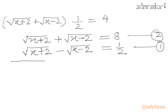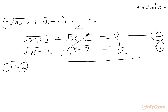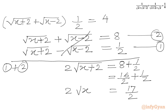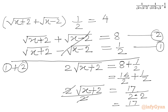Now we are going to add both equations: equation 1 plus equation 2. The square root (x minus 2) terms cancel. We get 2 times square root (x plus 2) equals 8 plus 1 over 2, which is 16 over 2 plus 1 over 2, giving 17 over 2. Now we divide both sides by 2, cancelling 2 from the left-hand side, and the right-hand side gives us 17 over 4.